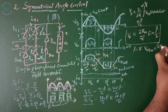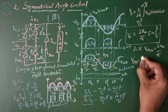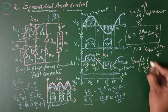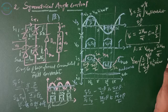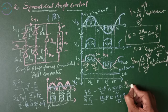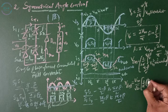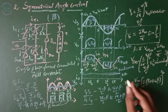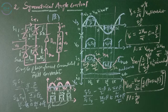Vrms is given by: Vrms = sqrt( (2 / 2pi) * integral from pi minus beta/2 to pi plus beta/2 of Vm^2 * sin^2(omega*t) d(omega*t) ). Calculating this gives Vrms = (Vm / sqrt(2)) * (1/pi * (beta + sin(beta)))^(1/2). You can then calculate the power factor using the formula Is1/Is, which equals (2*sqrt(2) / pi) * sin(beta/2).